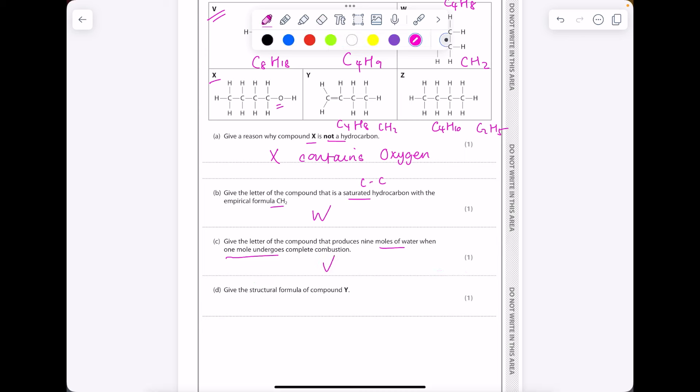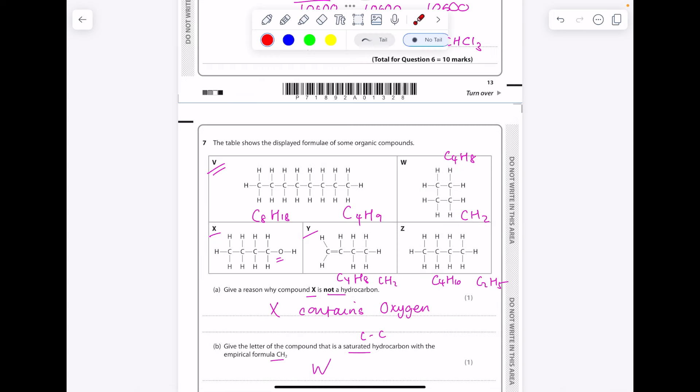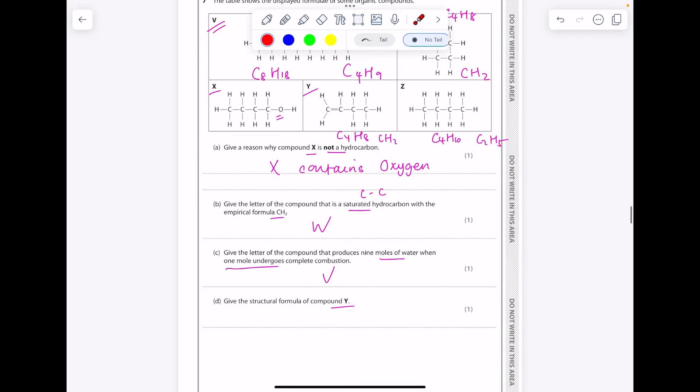Give the structural formula of compound Y. So a structural formula is like a condensed displayed formula. So just write down what you can see. We have CH2, CH, CH2, CH3.